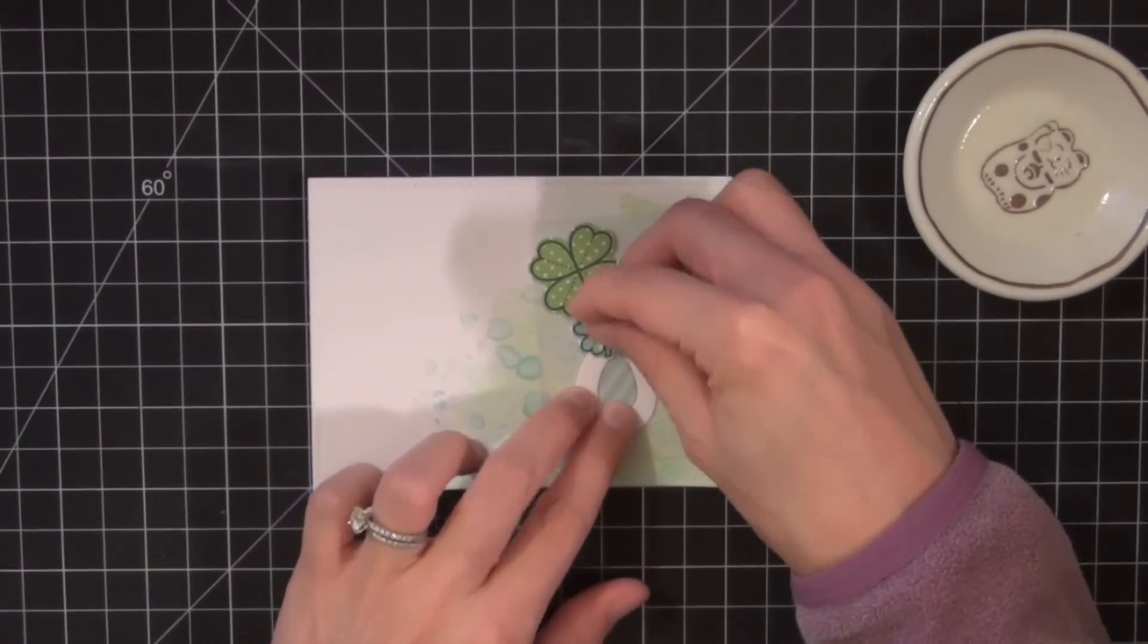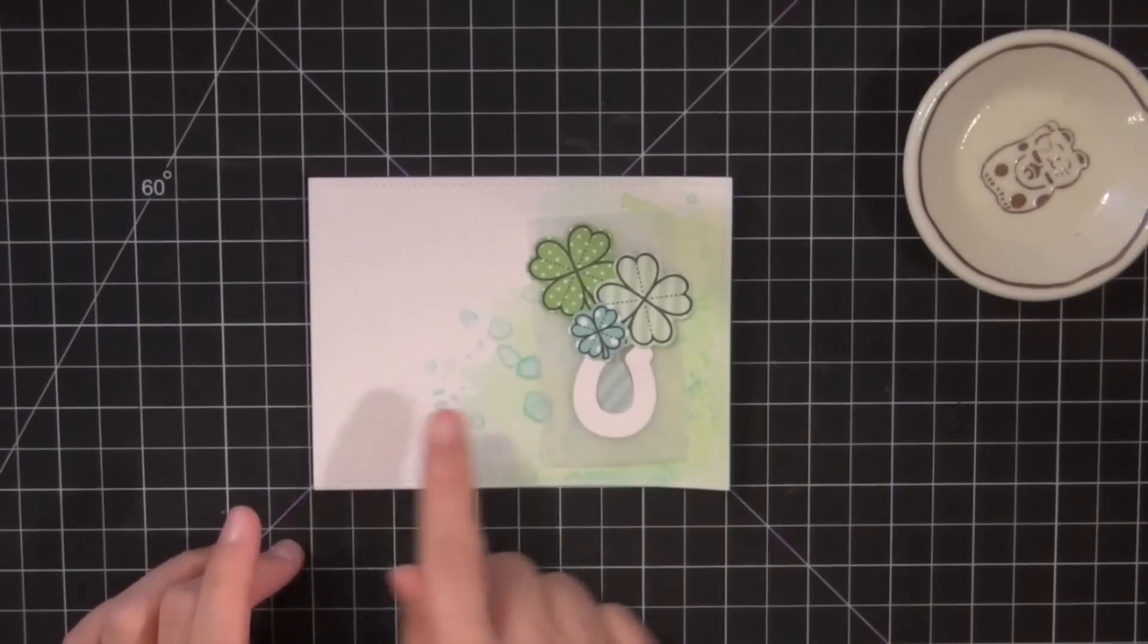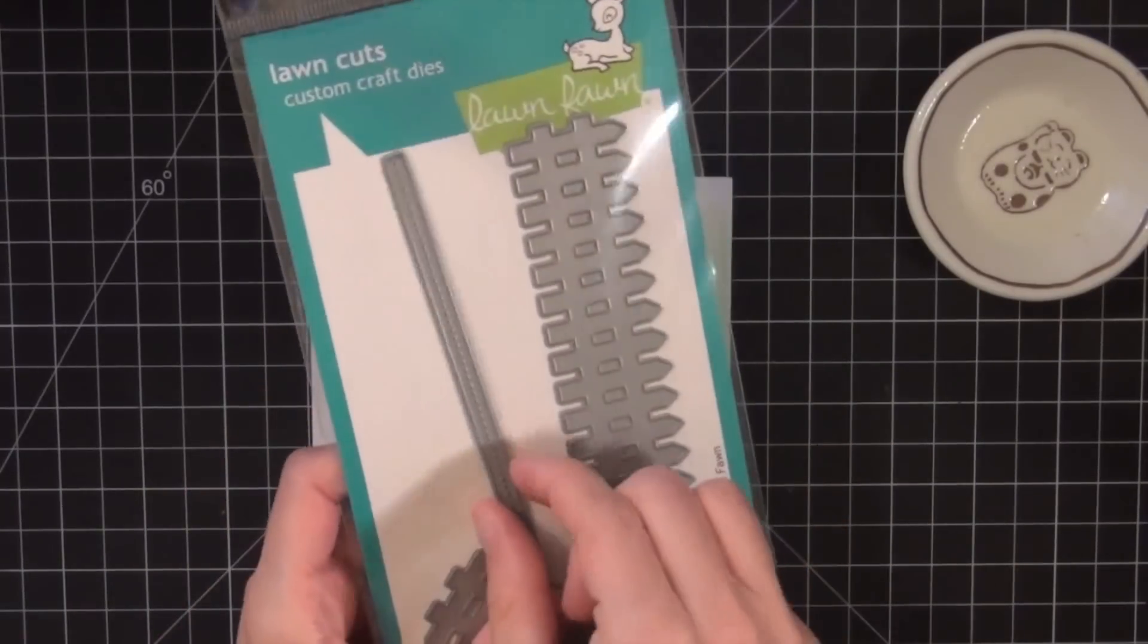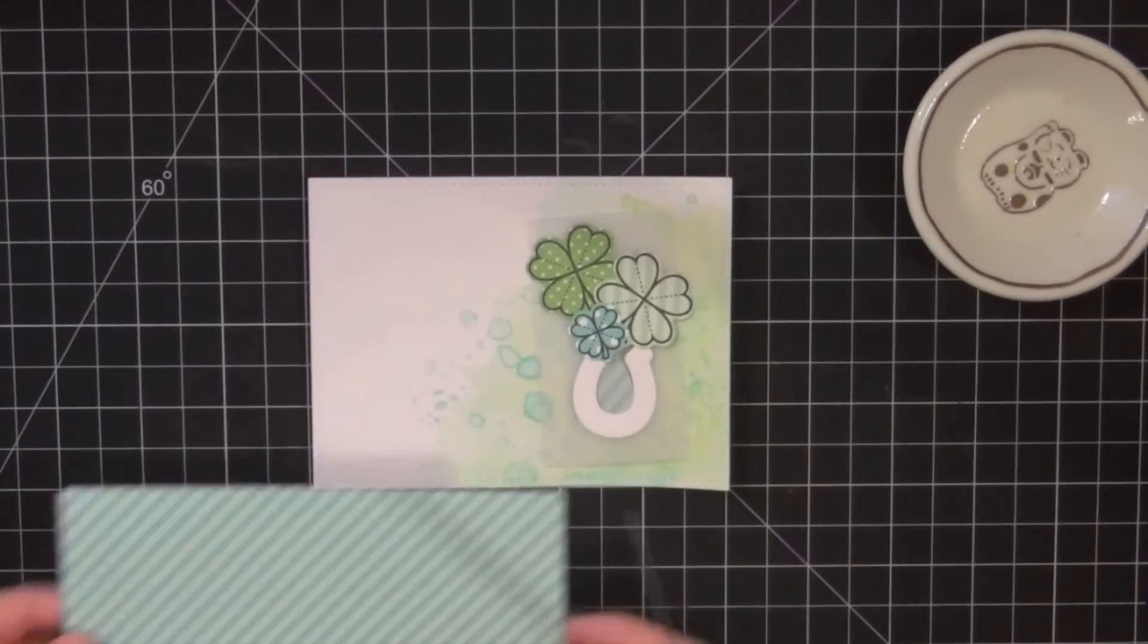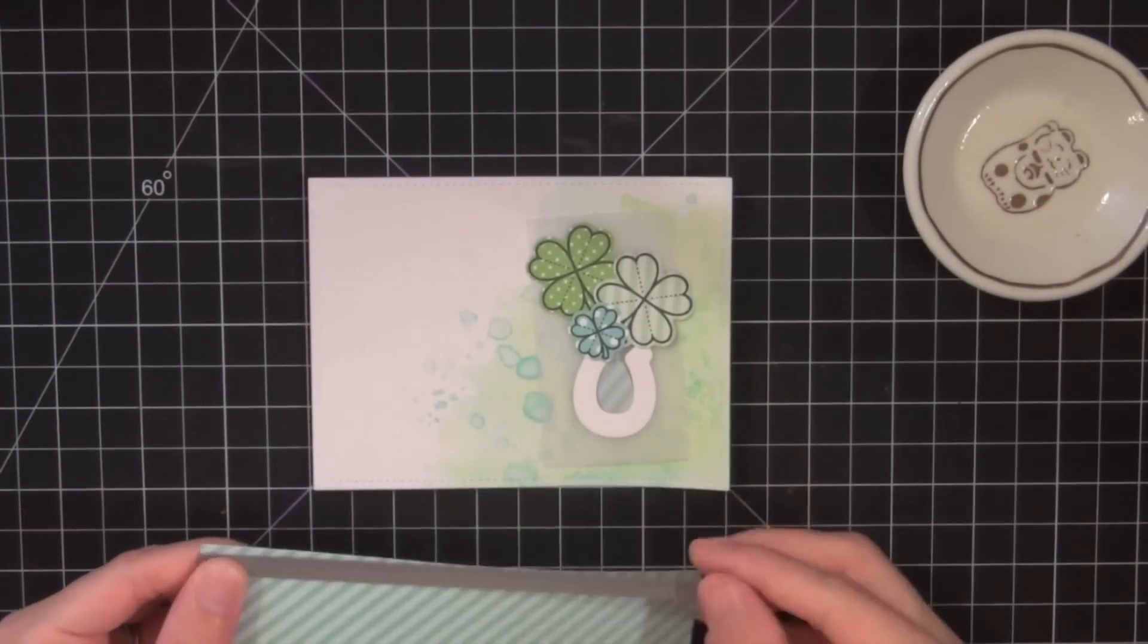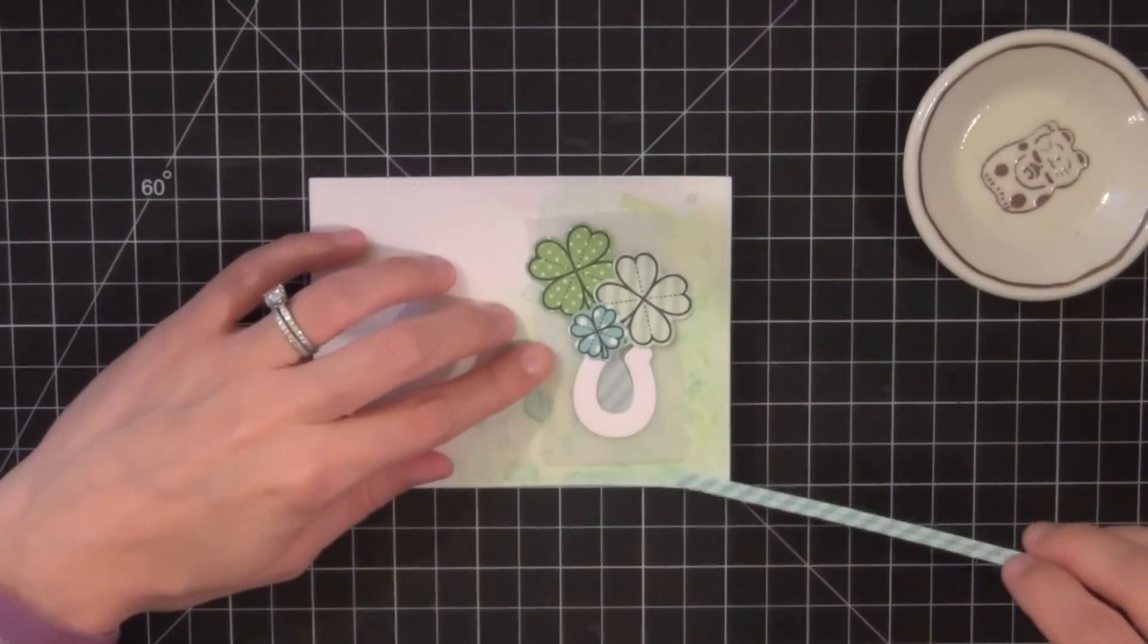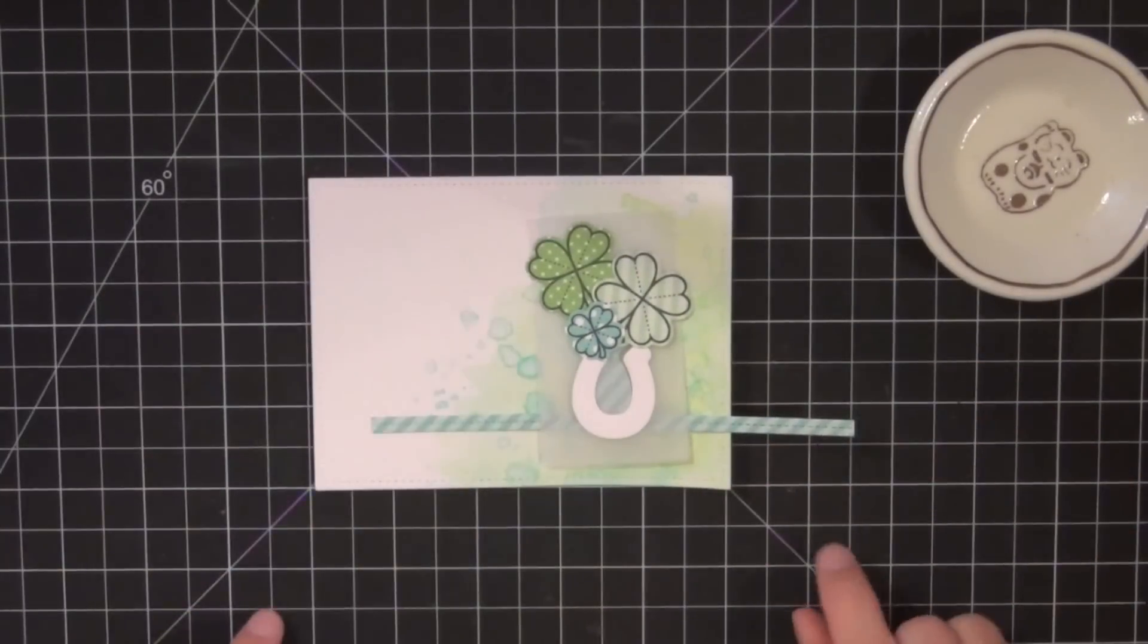And then I'm just kind of arranging things trying to figure out the placement of everything and I felt like I needed a horizontal piece on the card in order to ground the bouquet. So I'm using this stitched die from that fence die set.